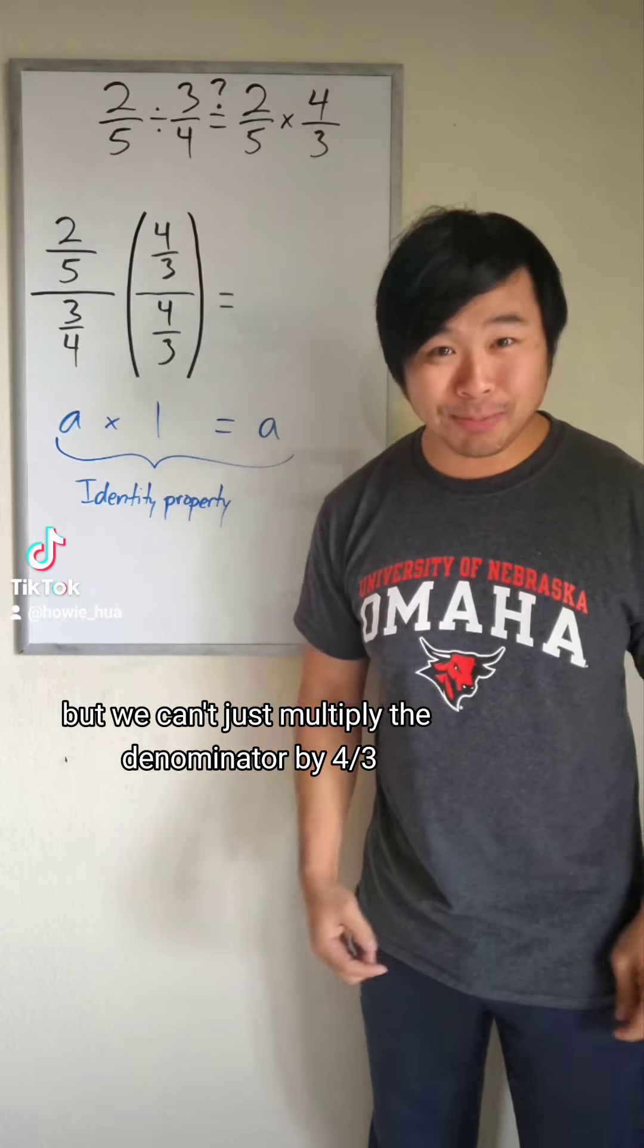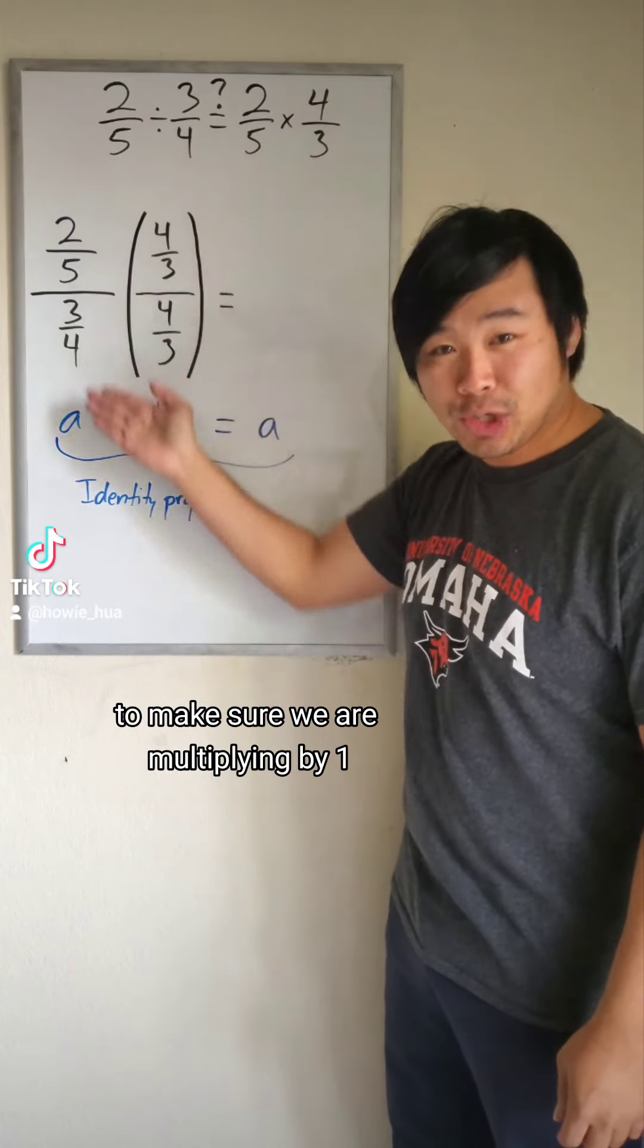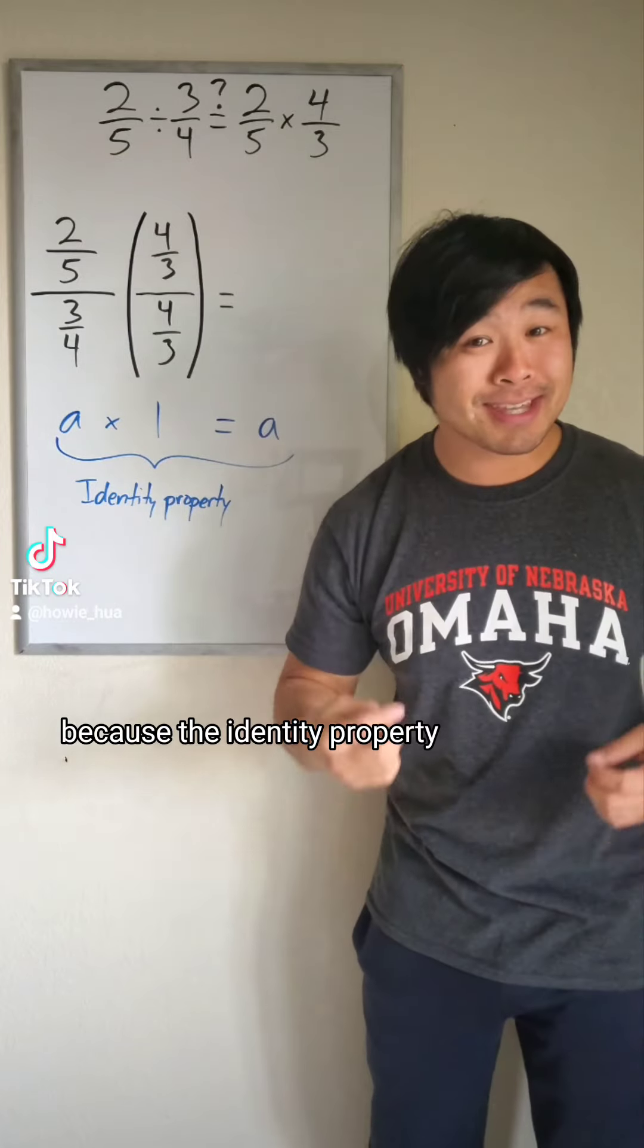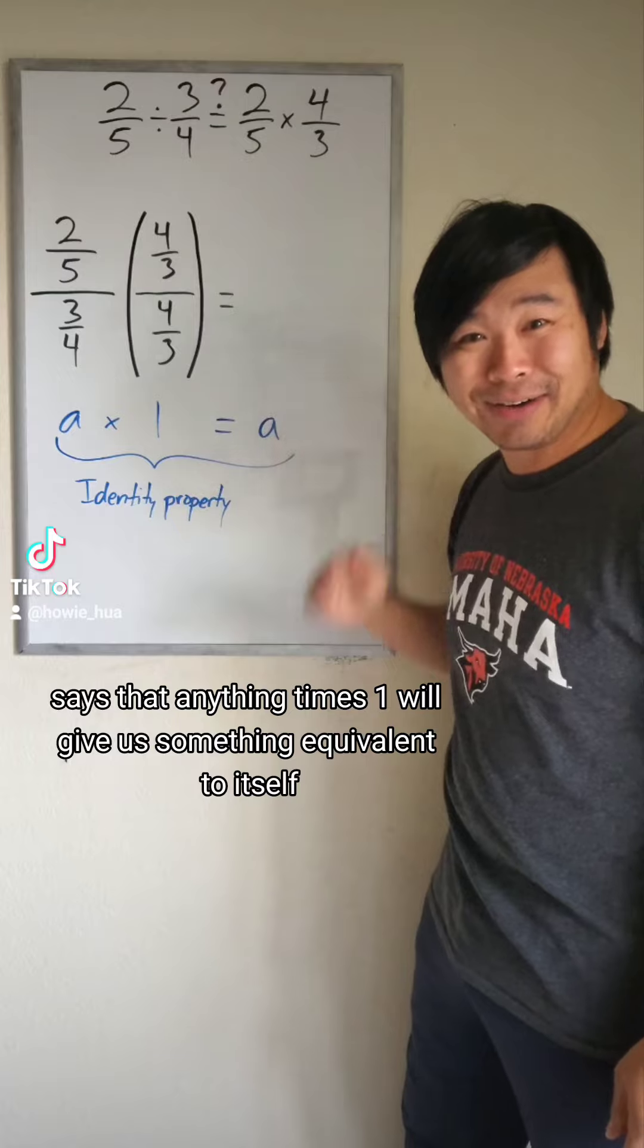But we can't just multiply the denominator by 4 thirds, we need to multiply the numerator by 4 thirds as well to make sure we are multiplying by 1, because the identity property says that anything times 1 will give us something equivalent to itself.